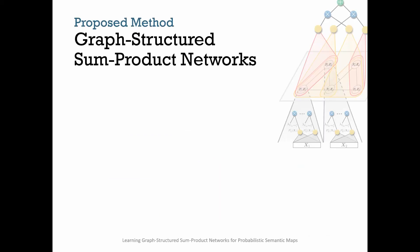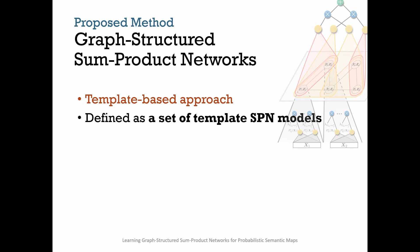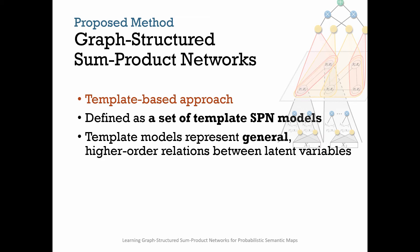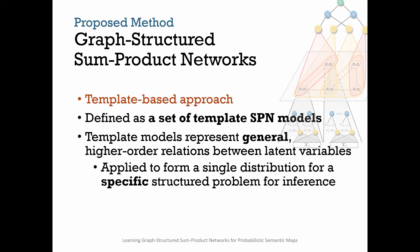In this work, we propose the Graph-Structured Sum-Product Networks, or Graph SPNs, a template-based approach to structure prediction. A Graph SPN is defined as a set of template SPN models. The template models represent learned general high-order relations between latent variables. These models are then applied to form a single distribution for a particular structure problem of arbitrary size in order to perform probabilistic inference.